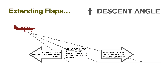Extending flaps also increases descent angle, which can be a good thing when an object such as a tree is up against a runway. Based on tests with my own Cessna 152, the lift-to-drag ratio with 30 degrees of flaps was equivalent to that of a 20-knot headwind in a clean flap configuration.